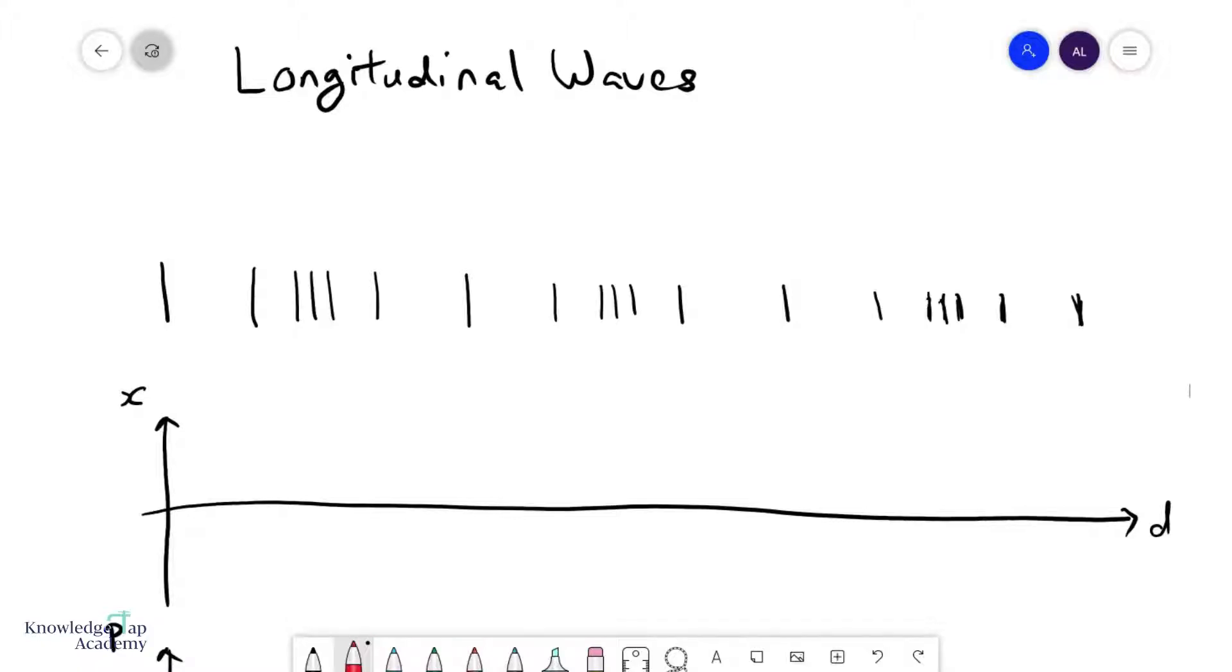We're going to talk about longitudinal waves. Remember that in a longitudinal wave, the particles vibrate parallel to the direction of wave propagation. Here we have a representation of a longitudinal wave, so you can see that the particles are vibrating in such a way where they are displaced horizontally, assuming the wave goes this way.